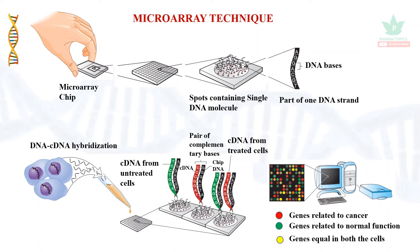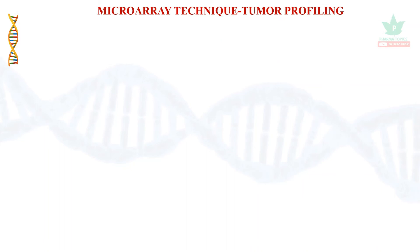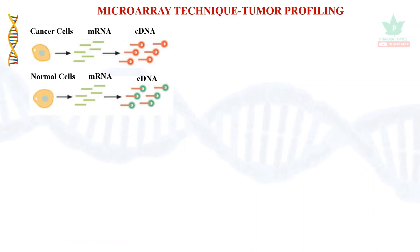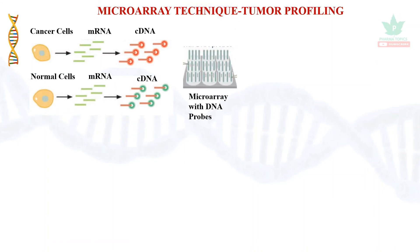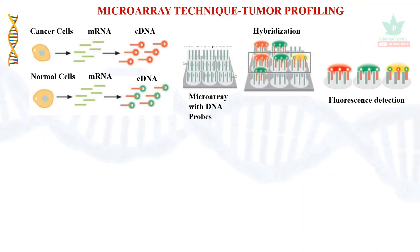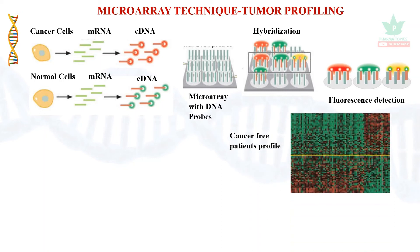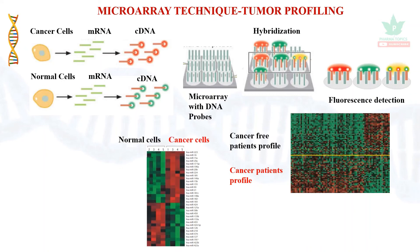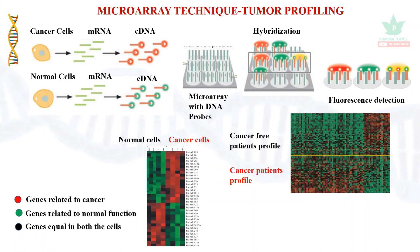Tumor profiling uses the microarray technique as follows: cDNA from a cancerous cell and a normal cell are hybridized onto a microarray plate containing probes. Fluorescence detects a pattern. The first picture shows cancer-free patients; others show cancer patients. You can learn the normal versus cancer patient pattern. Red color indicates cancer-related gene expression, green indicates normal cell function. This is an important tool in cancer research to compare normal and cancerous cell gene expression.